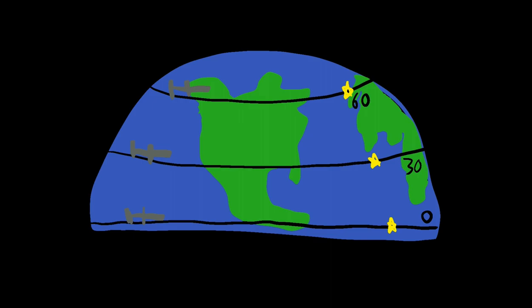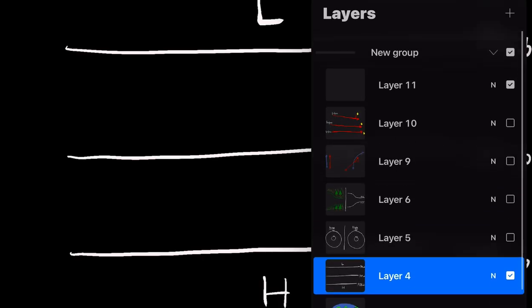Their destinations are on these various lines: zero latitude, 30 latitude, and 60 latitude. The point I'm trying to make is the deviation due to the Coriolis effect — the difference between actual path and perceived path — is going to be larger the higher up you go. On the equator, that airplane just takes a straight path; there is no Coriolis effect. As you get higher up, there's a small deviation that becomes much larger. As you get to higher latitudes, the Coriolis effect is stronger. At the equator, Coriolis effect is zero; as you go higher toward the pole, it is stronger.